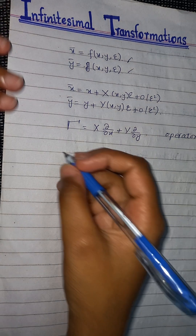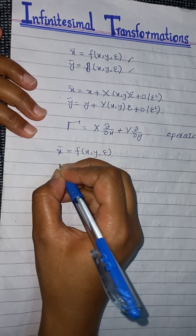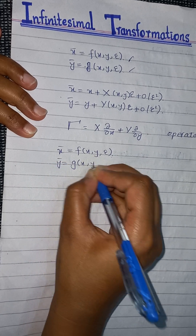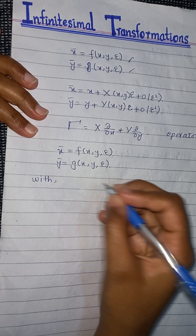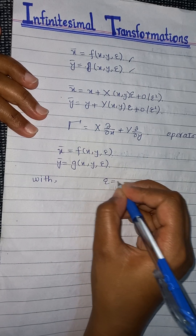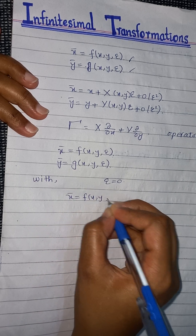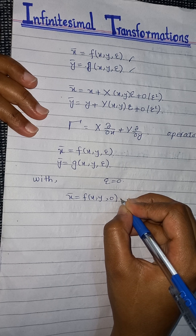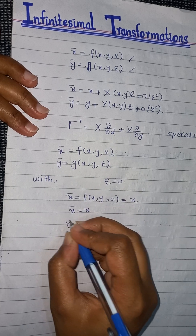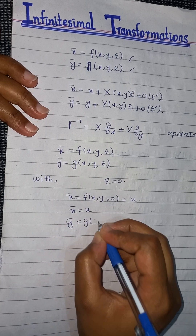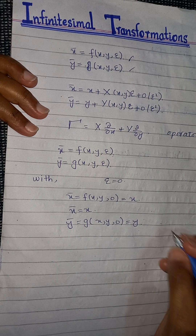We have transformations x-bar equals f(x, y, epsilon) and y-bar equals g(x, y, epsilon). We can also define an identity transformation: when epsilon equals zero, x-bar equals f(x, y, 0) which equals x, and similarly y-bar equals g(x, y, 0) which equals y. These are the identity transformations.